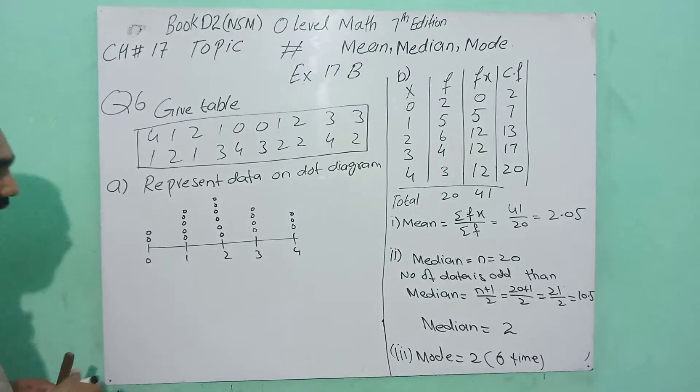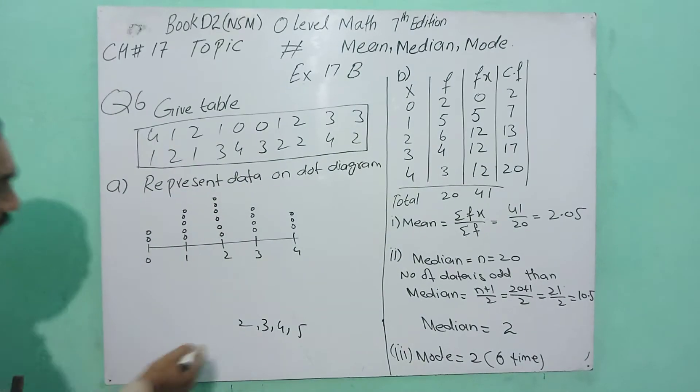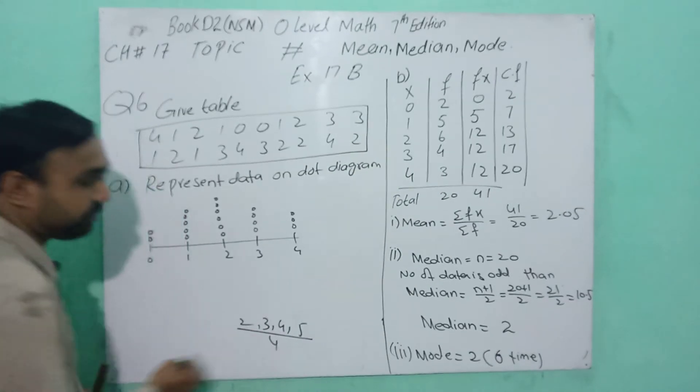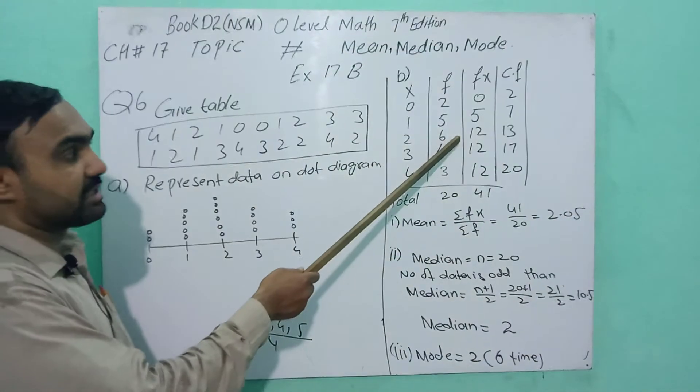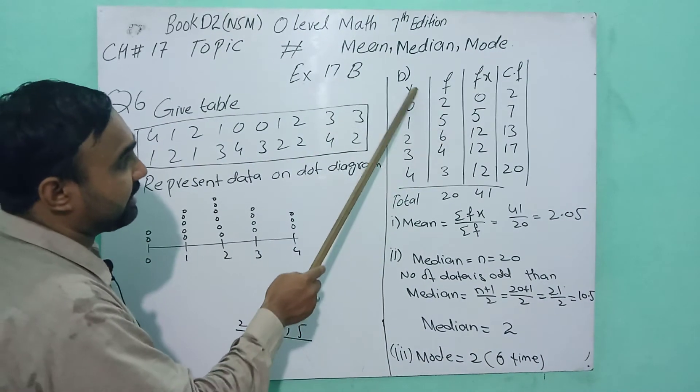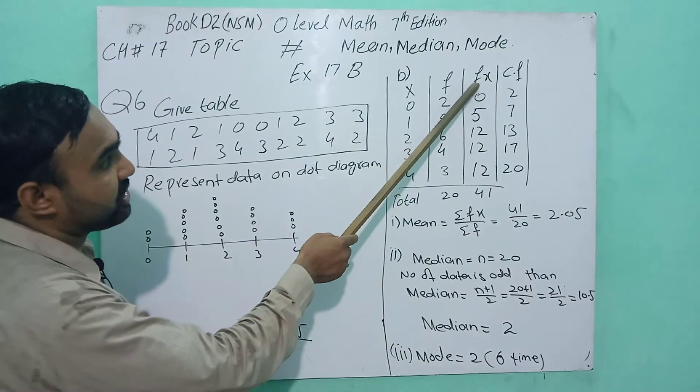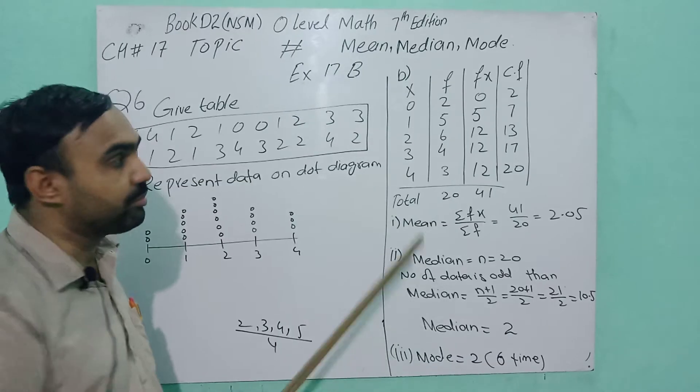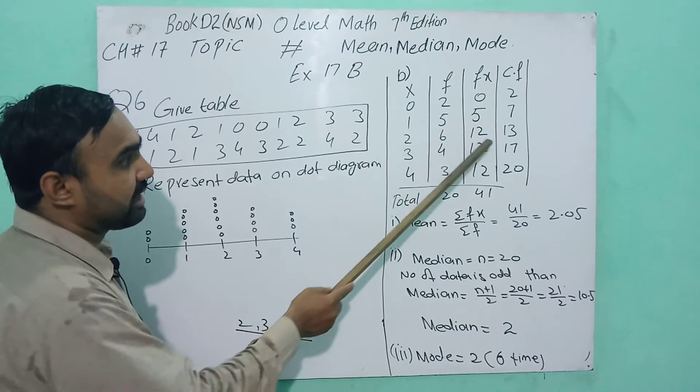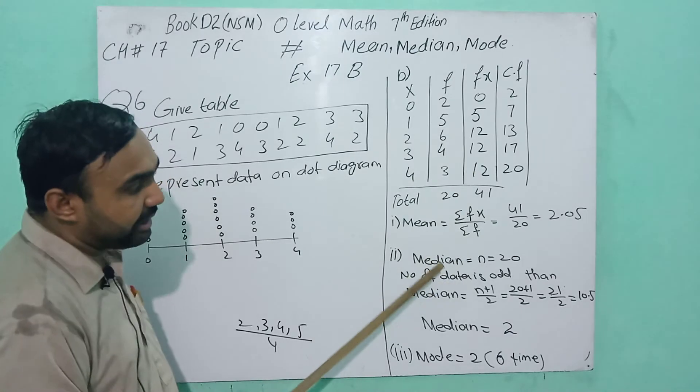The mean is Σfx over Σf. If only data is given like 2, 3, 4, 5, find the mean by sum of all data divided by number of data. In this question, given a frequency, multiply x with f. 0×2=0, 1×5=5, 2×6=12, 3×4=12, 4×3=12.